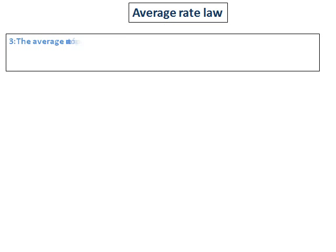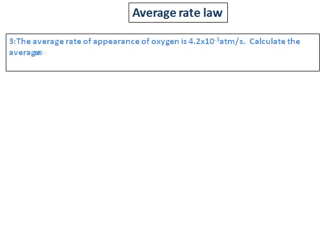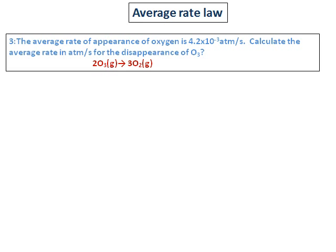Question number 3 on average rate law: the average rate of appearance of oxygen is 4.2 times 10 to the power of negative 3 atmosphere per second. Calculate the average rate in atmosphere per second for the disappearance of ozone.